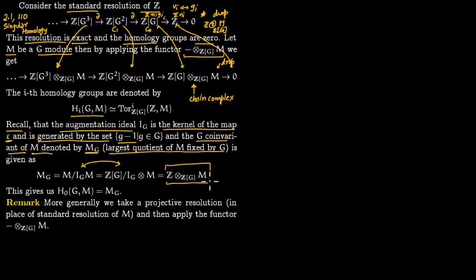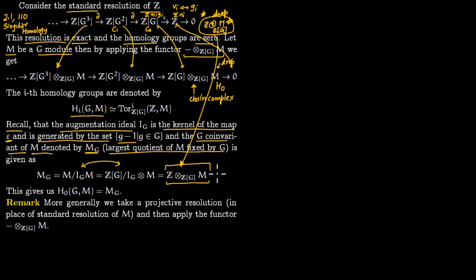Notice that this M_G is precisely the term which we dropped when applying the tensor functor. We said that exactness is lost because we dropped that term. So when you compute the homology groups, the zeroth homology group H₀ is precisely equal to the term we dropped, which is the G-coinvariant M_G. That gives us the zeroth homology group.